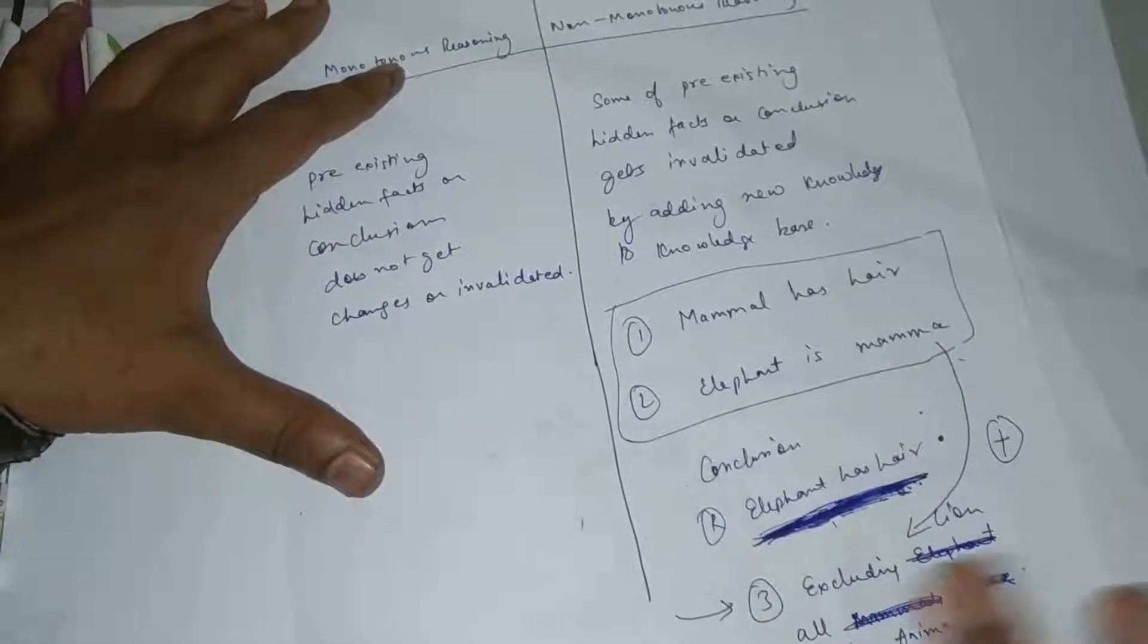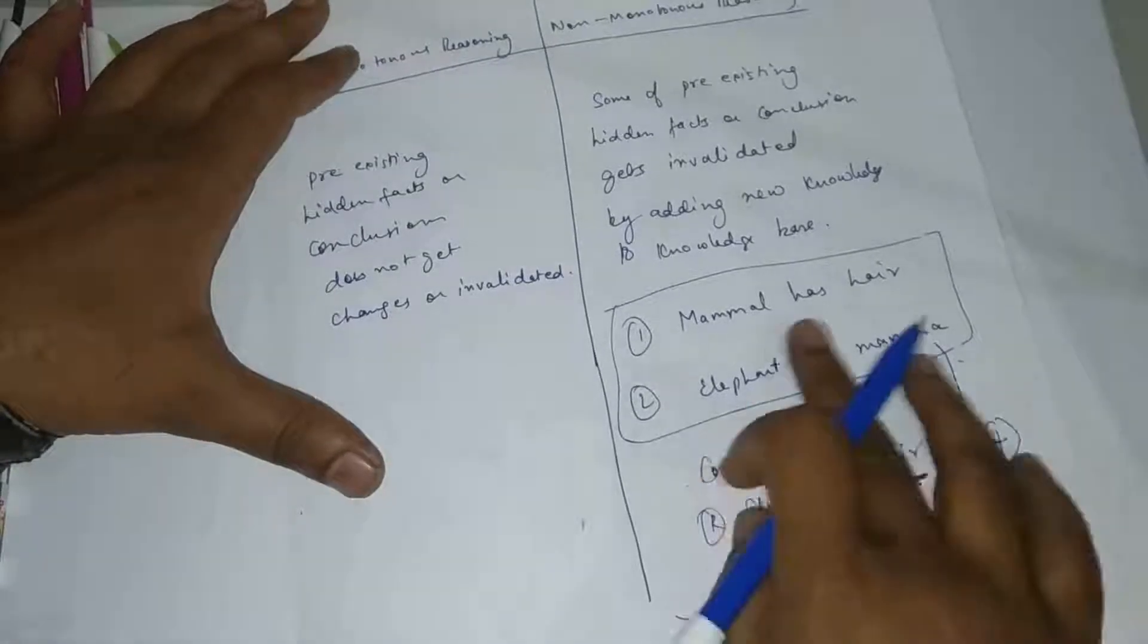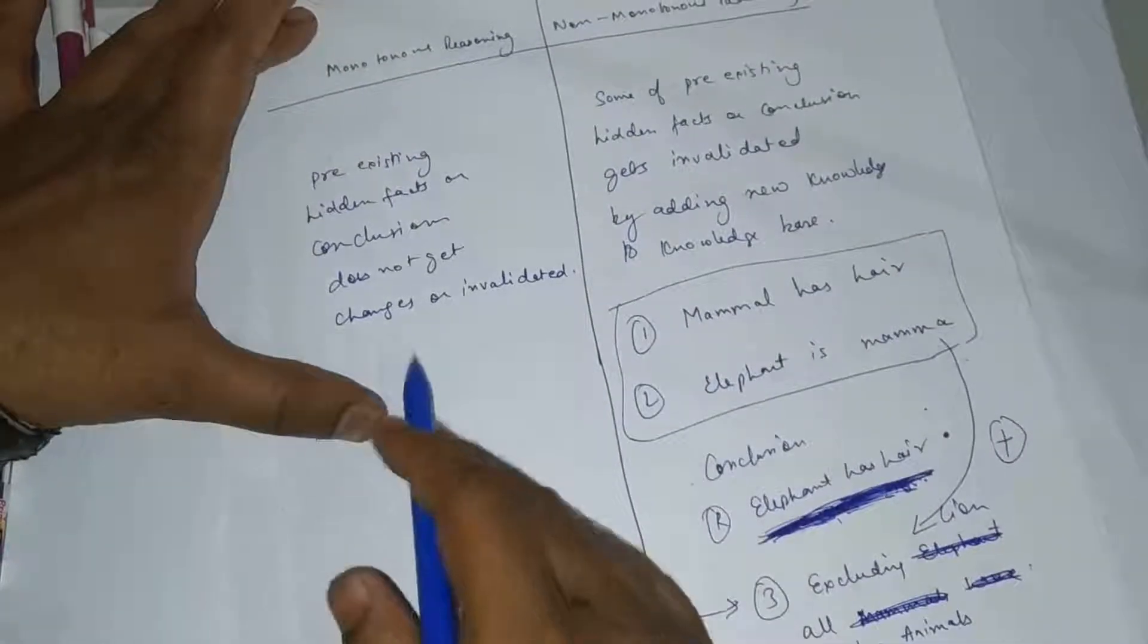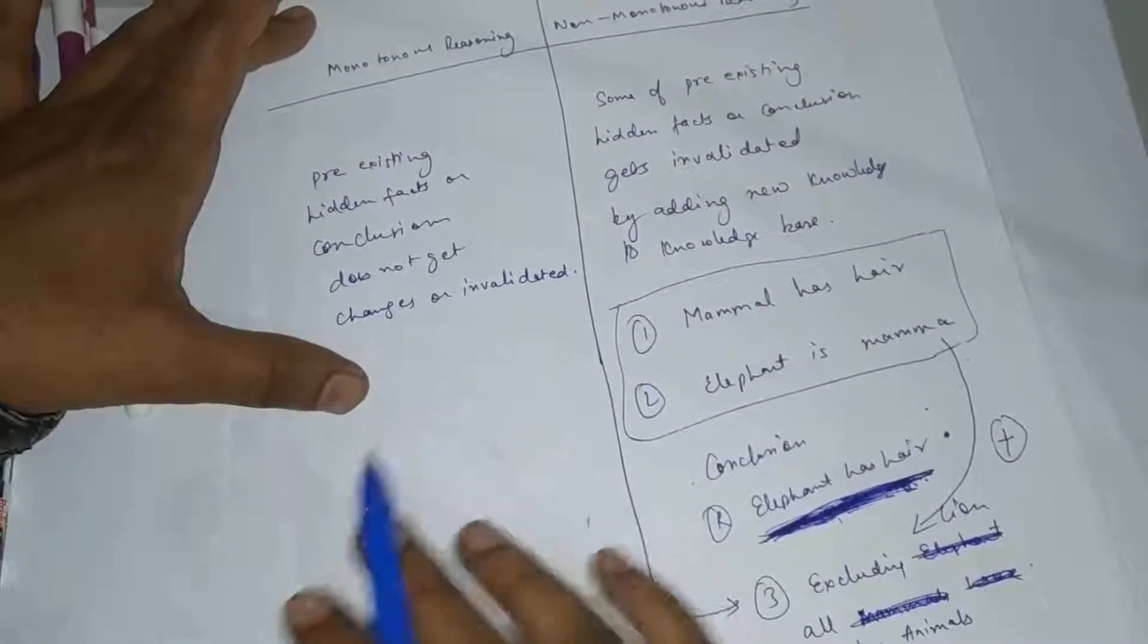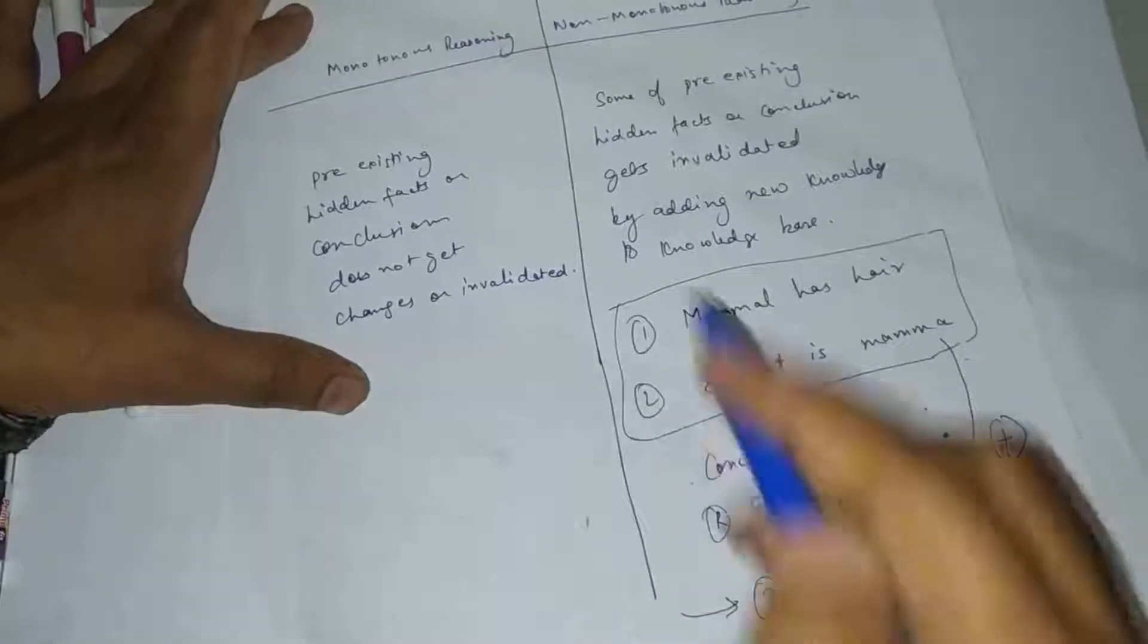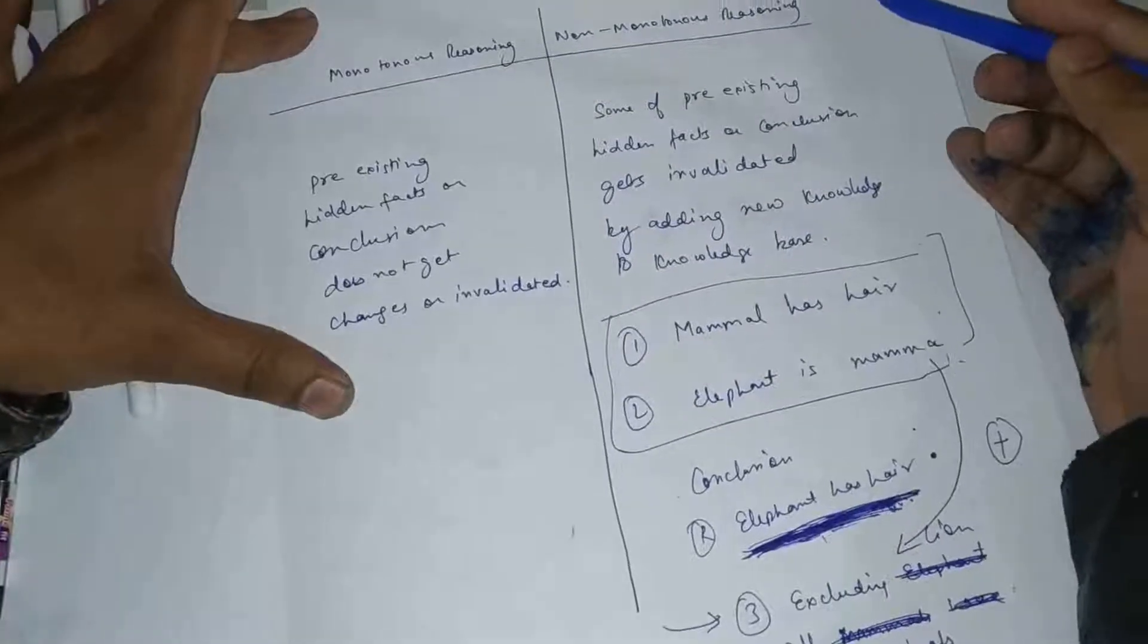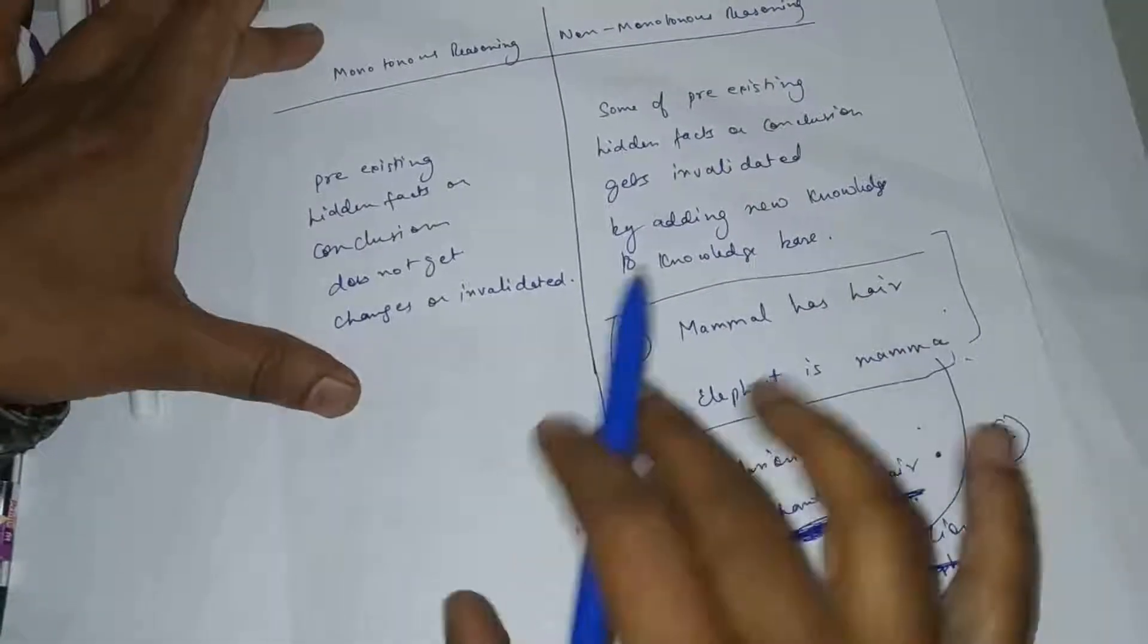The conclusions are not invalidated. This reasoning is monotonous reasoning. Monotonous reasoning is when pre-existing facts are not invalidated. That is the difference between monotonous and non-monotonous reasoning.